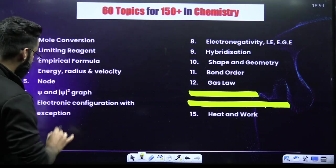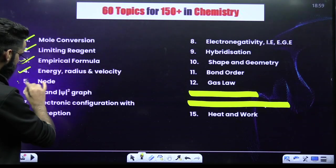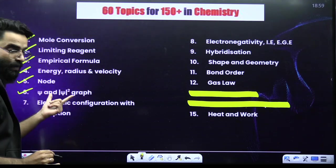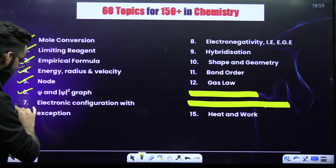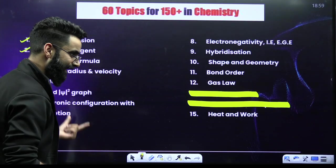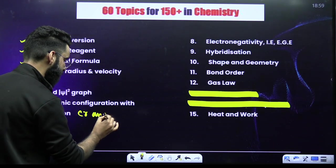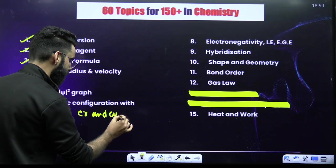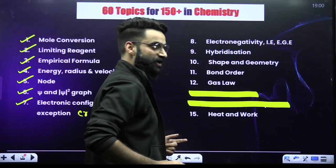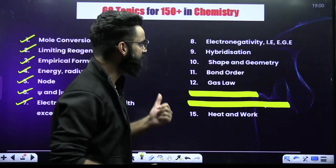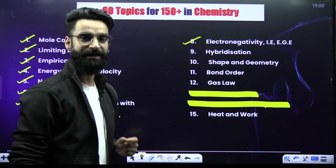In your Atomic Structure: energy, radius, velocity, nodes, psi and psi-square, probability distribution curves, electronic configuration with exceptions that include chromium and copper. When it comes to your Periodic Classification: electronegativity, ionization energy, and electron gain enthalpy.